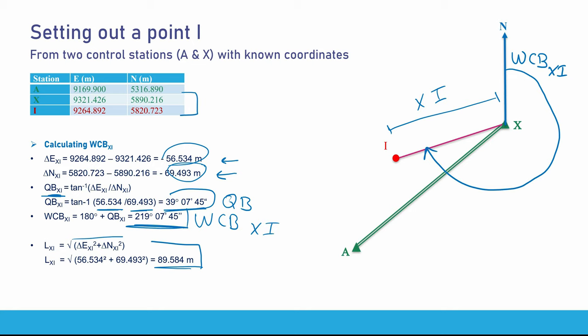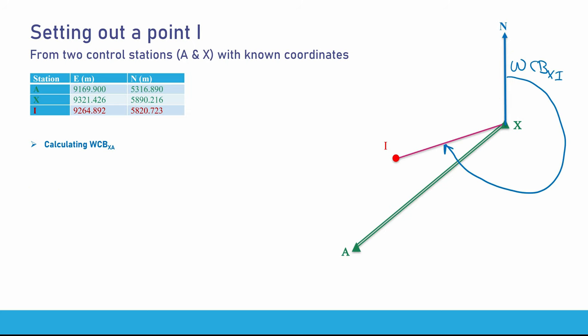Once we've calculated the whole circle bearing of XI and the length of XI, we move to the next stage: calculating the whole circle bearing of XA. This is the angle from north measured clockwise to line XA. Let me show this on the sketch — this is the whole circle bearing of XA.